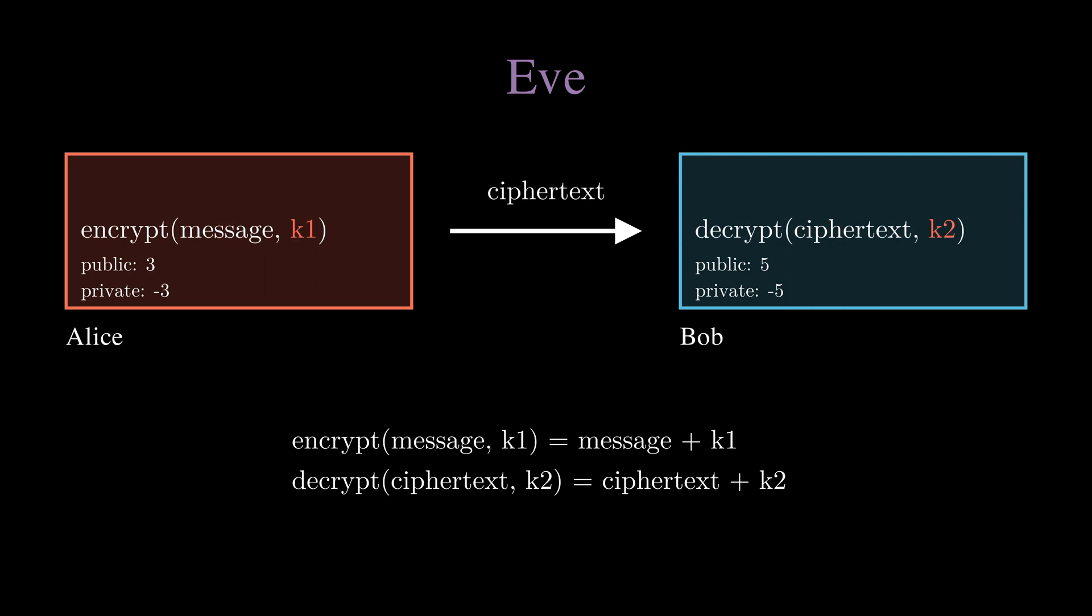However, a cool property is that instead of using the public key to encrypt and the private key to decrypt, you can also reverse it so that you use the private key to encrypt and the public key to decrypt. This time Alice sends the message 10, however instead of using Bob's public key, she encrypts the message using her own private key, negative 3.